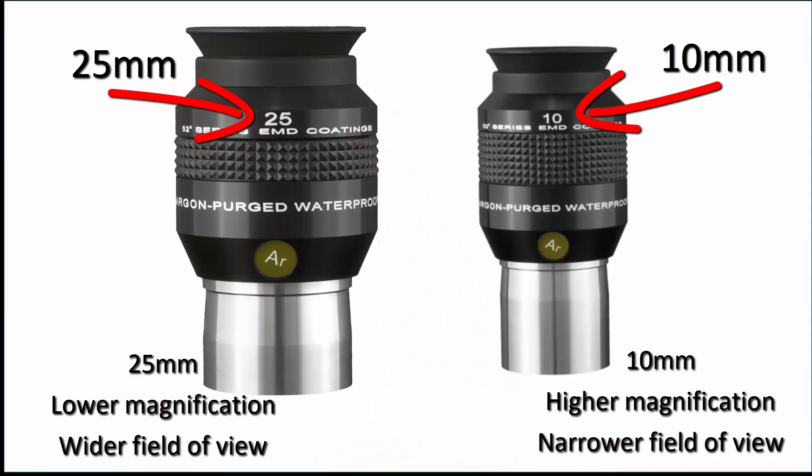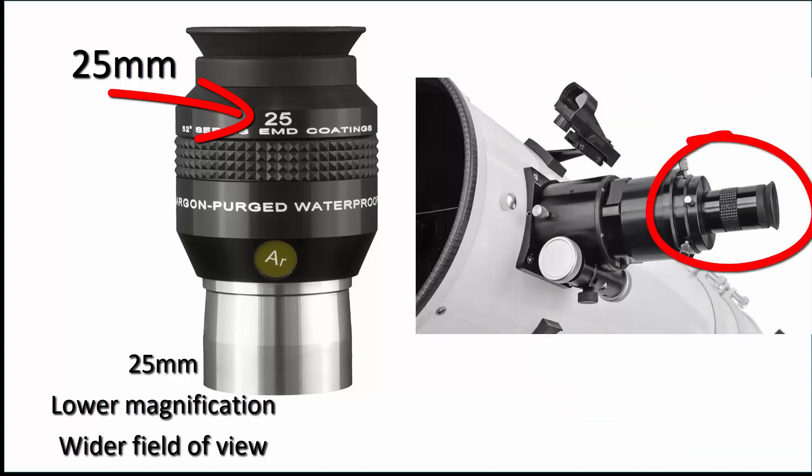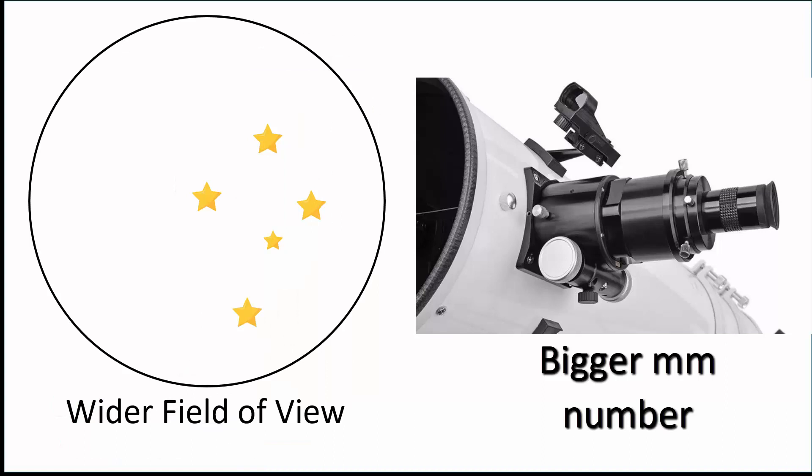Find the eyepieces for the main telescope. Select the one with the biggest millimeter number on it—this might be 25 millimeters or maybe 30 millimeters. Insert that eyepiece into the telescope eyepiece holder and tighten the locking screw. The eyepieces with the biggest numbers give you the widest field of view and therefore make it easier for you to find your target when looking through the main telescope.